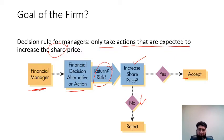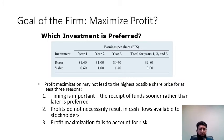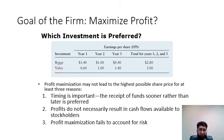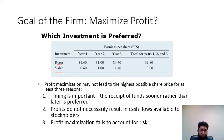If profit maximization were the goal, consider two investments: 'Rota,' which gives $1.40 per year for years one through two totaling $2.80 over three years, versus 'Wolf,' which gives $3.00 over three years but weighted toward later years. Profit maximization may not lead to the highest share price. Wolf gives less return early but higher returns in later years with a total higher than Rota, raising the question of which is truly preferred.